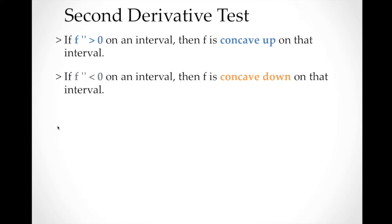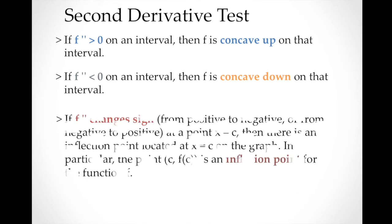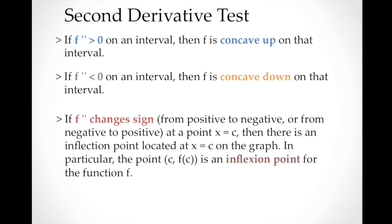There will be a situation where there is a switch in the shape of the graph — from concave up to concave down, or vice versa. In that case, we have what we call an inflection point. So if the second derivative changes sign from positive to negative or from negative to positive at a point x = c, then there is an inflection point located at x = c on the graph.